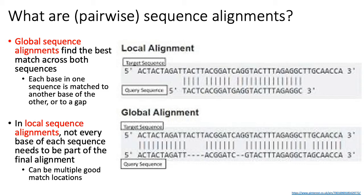In a global sequence alignment, you assume that every base in sequence X should have a match to a base or a gap character in sequence Y. Global sequence alignments are useful for whole genome alignments between closely related species — for example, aligning the human versus chimp genome to see how the two genomes have diverged since their common ancestry.